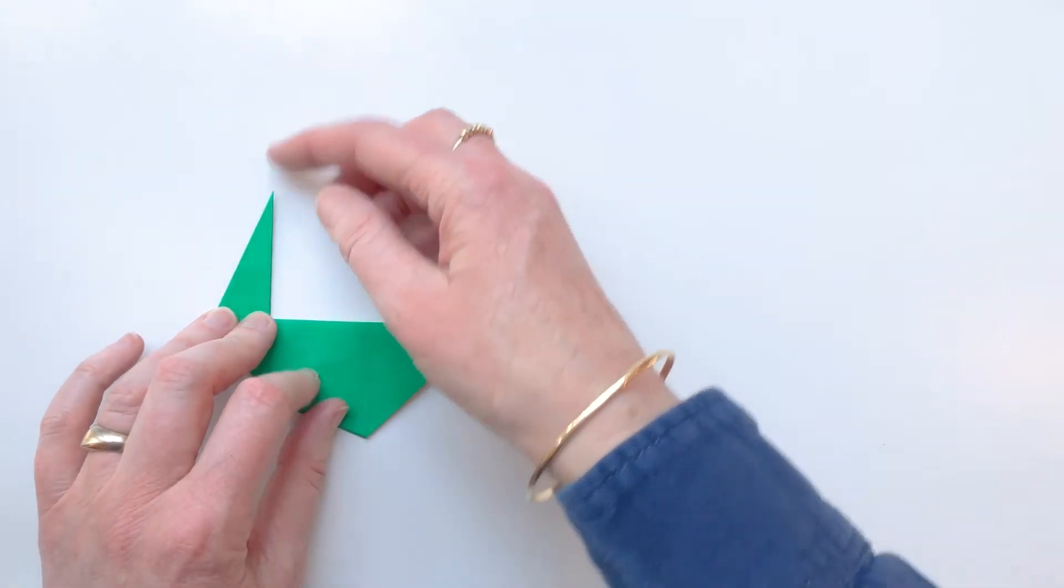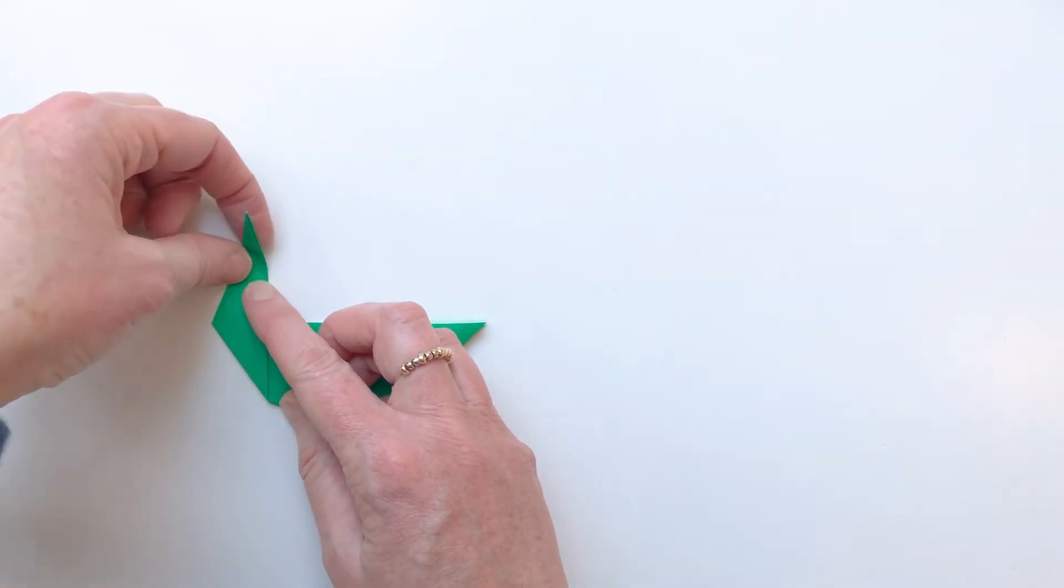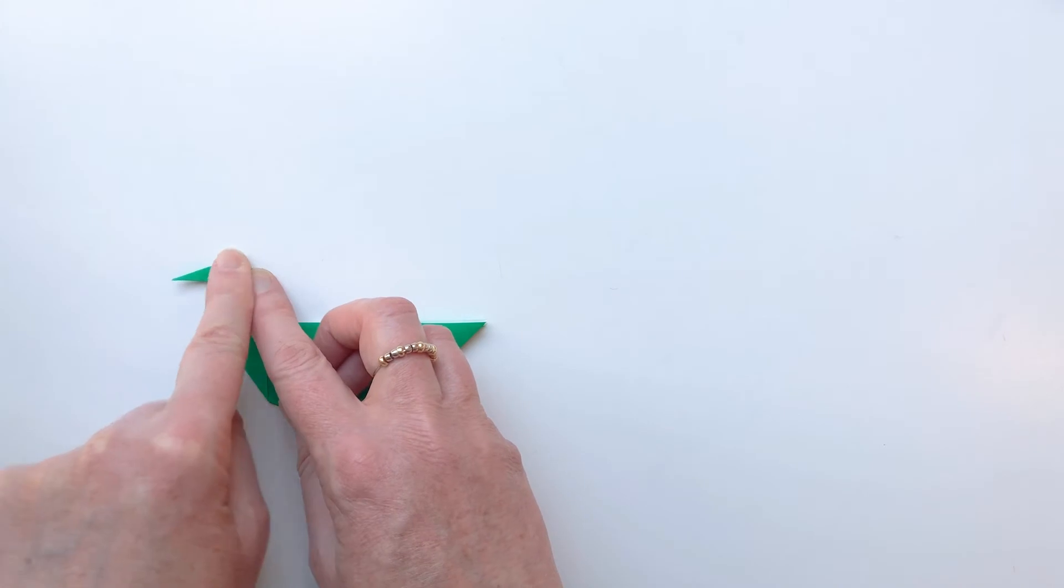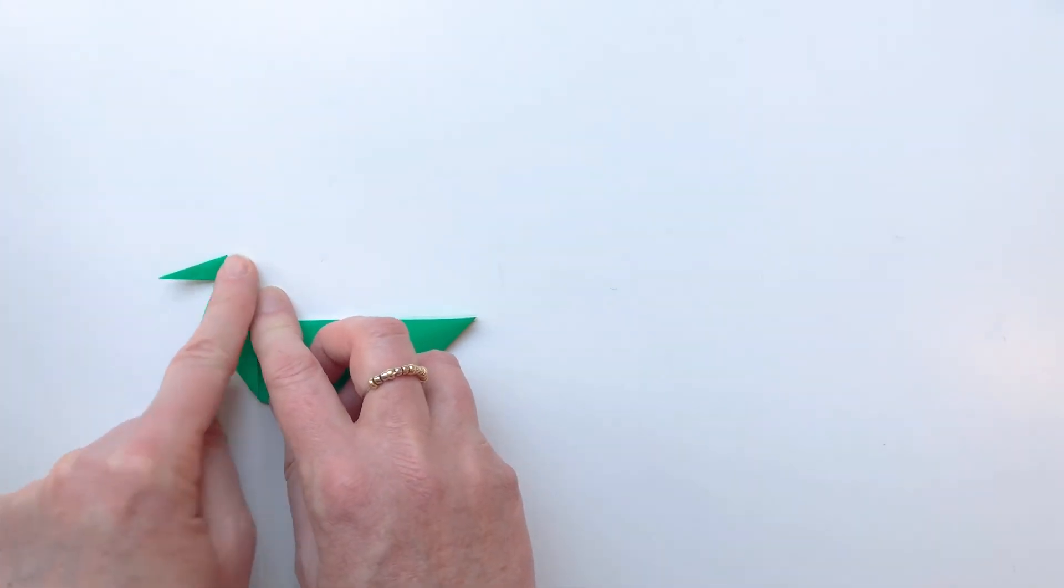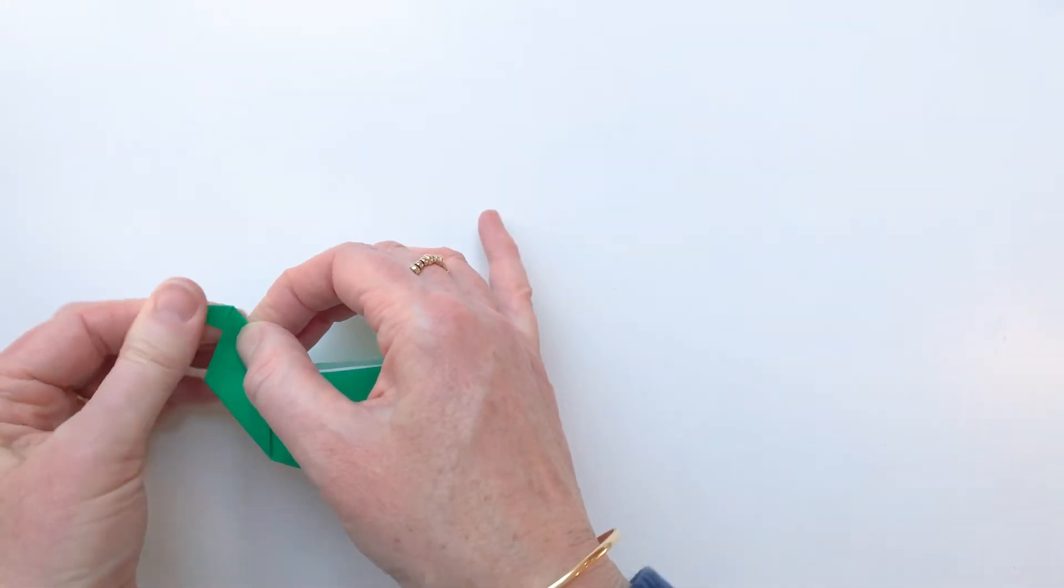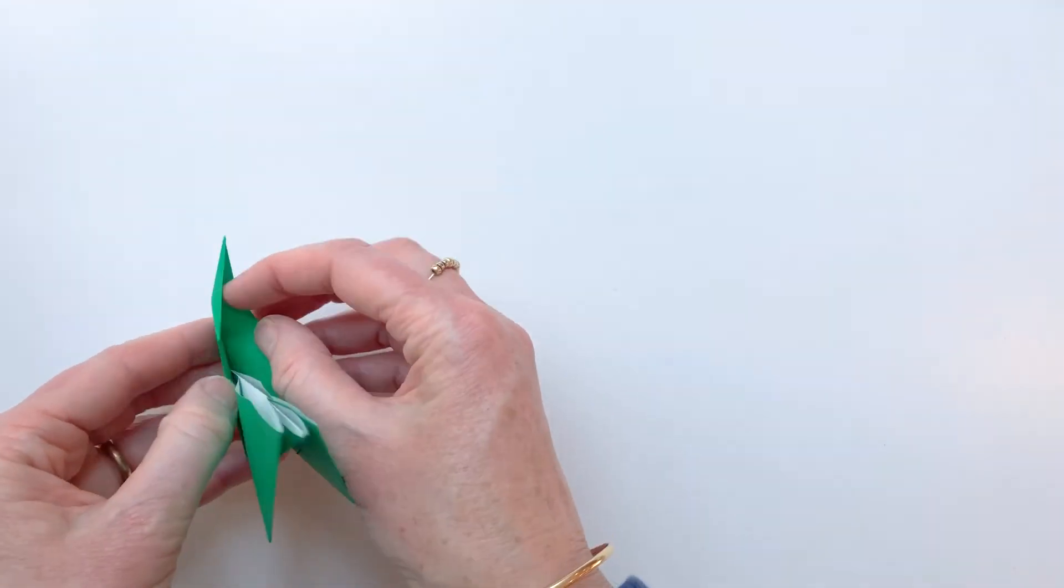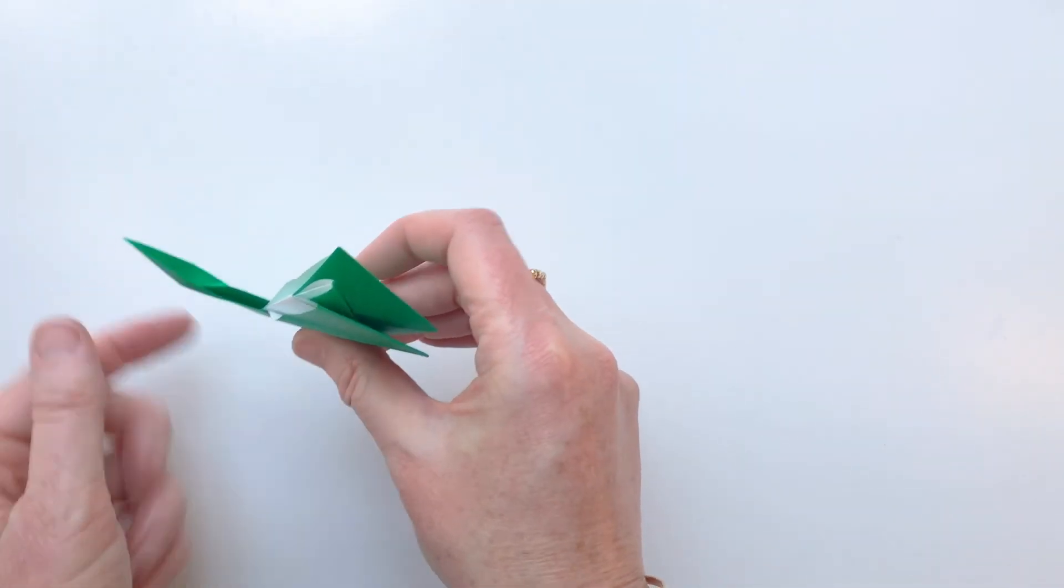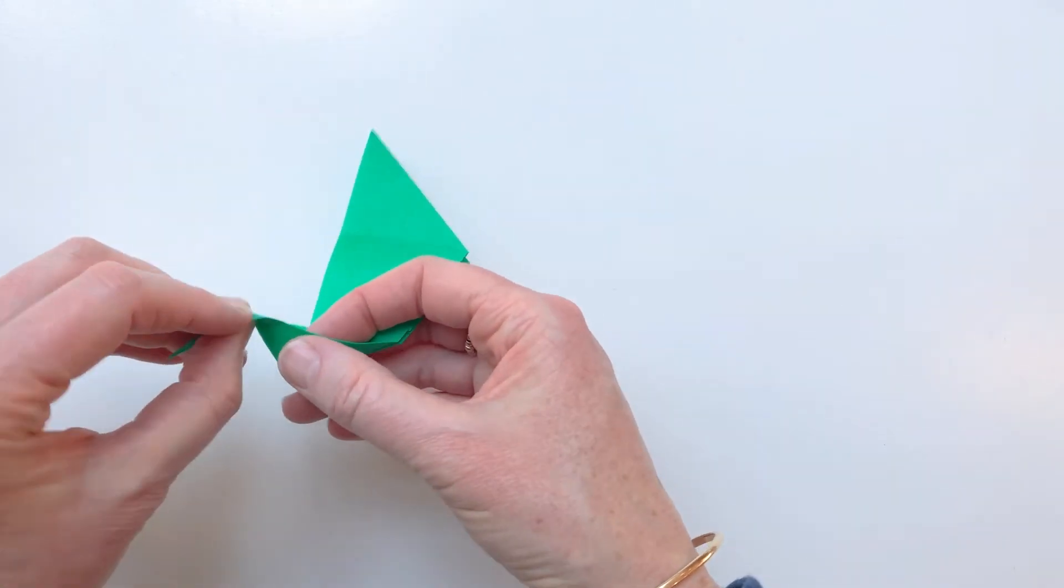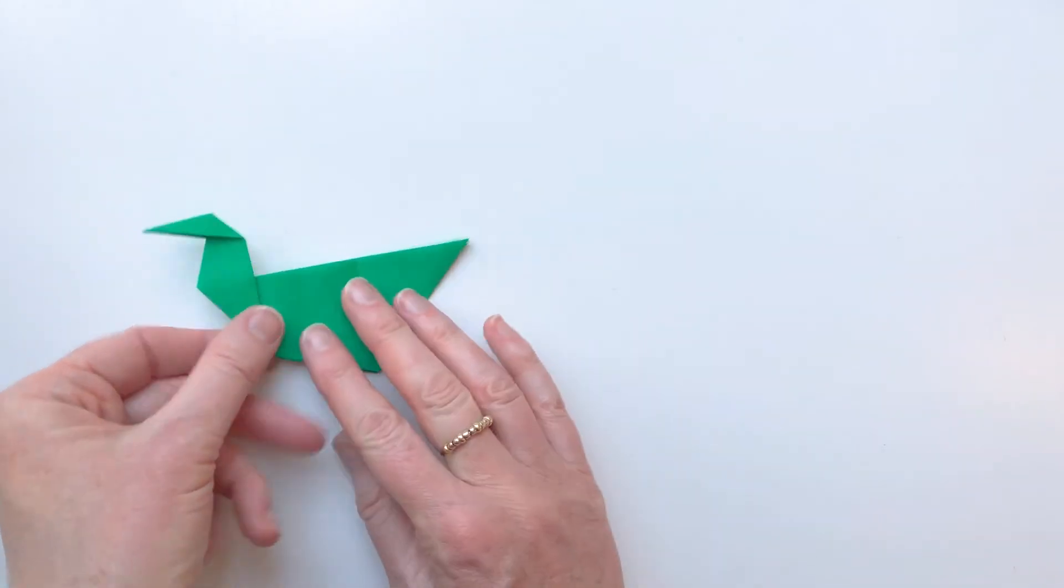Now we're going to do the head of the duck. So we're going to repeat what I just did just then. And fold this tip over so that we make a beak like that. And again, we're going to fold it the other way as well. And then open up that fold there. And gently push this forward again. And there you can see you've got a bird's head.